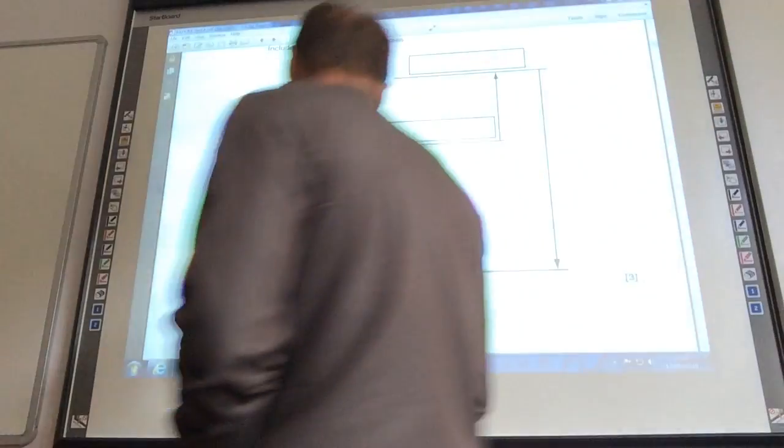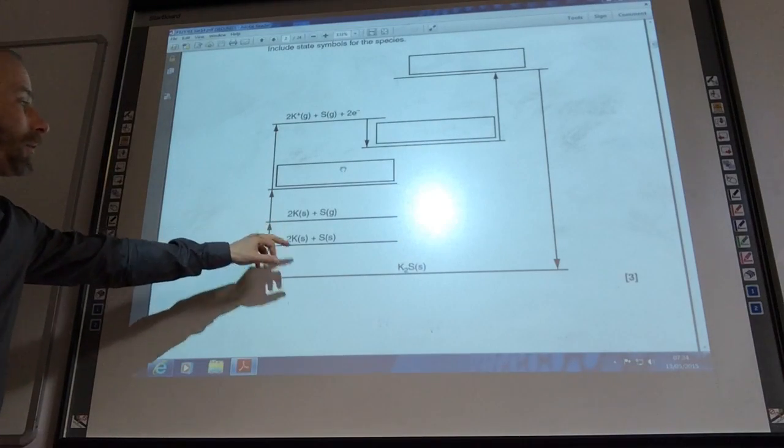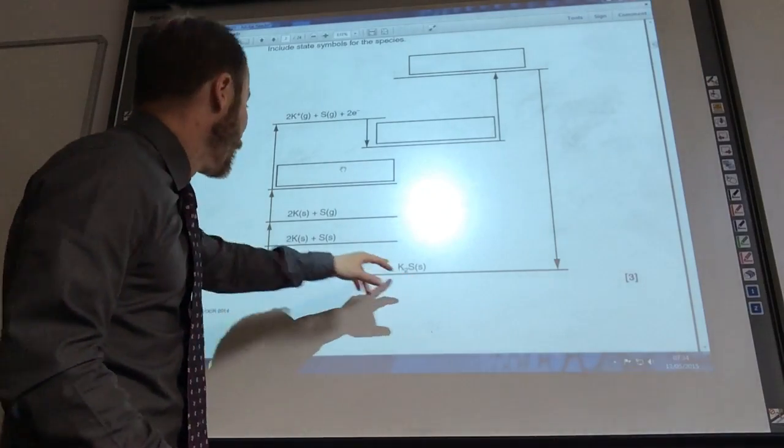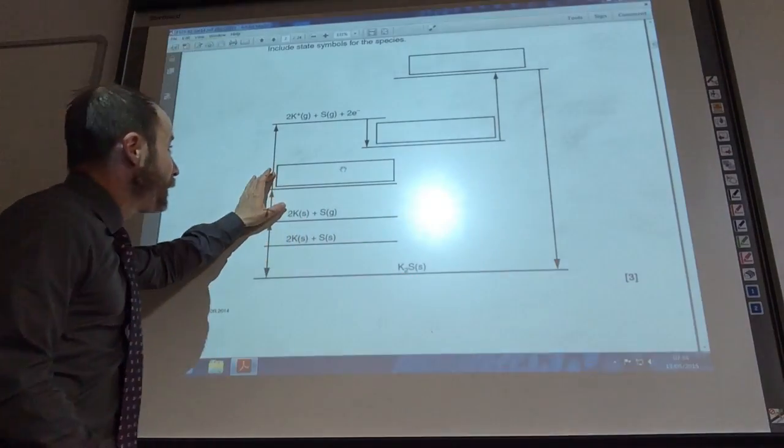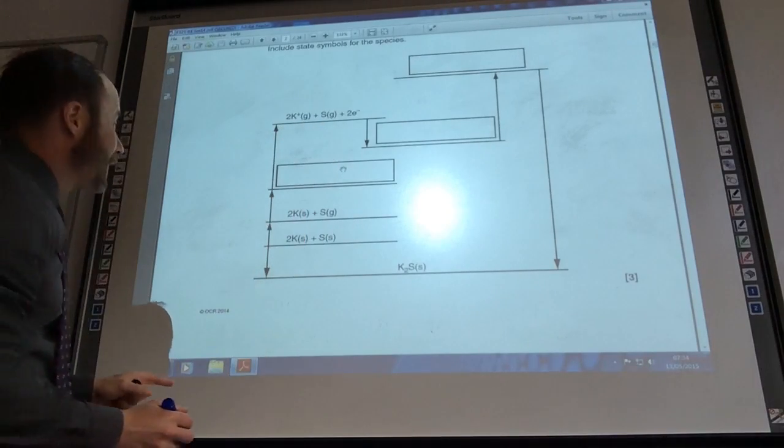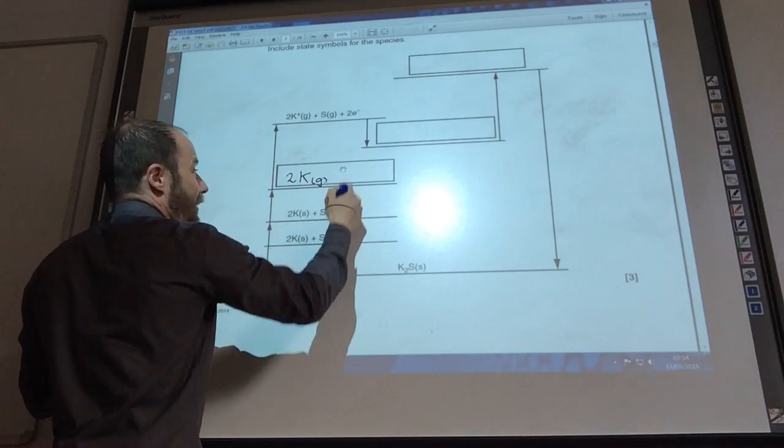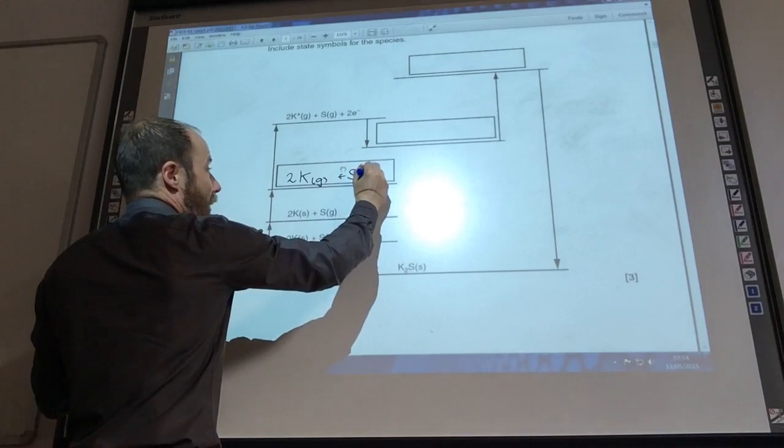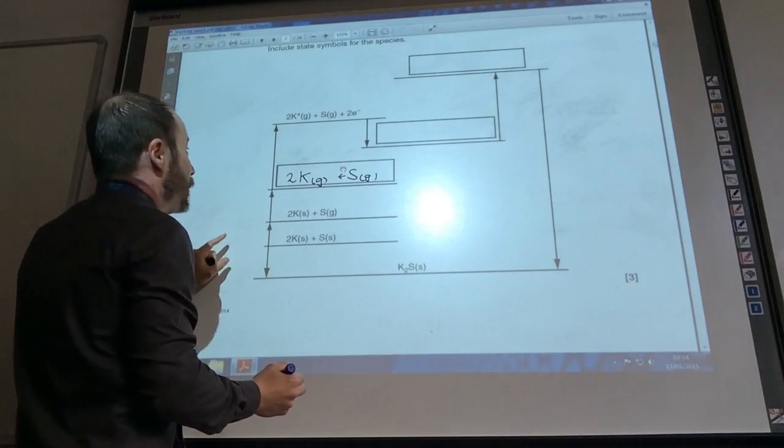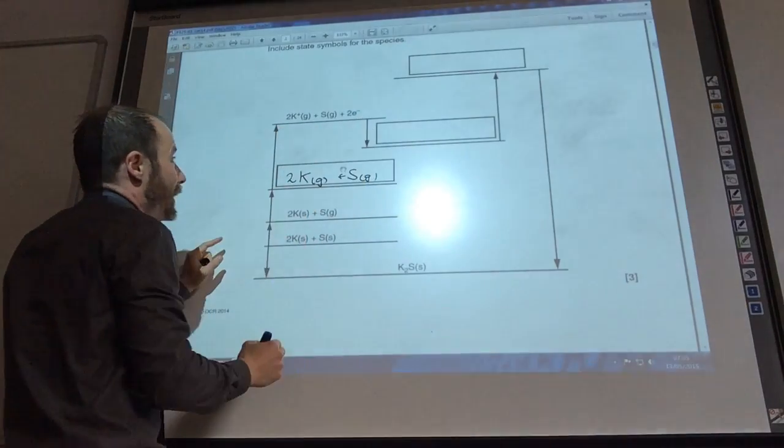The key things to notice is you have got two potassiums here as you go through. You're going to have two here, so you need to remember to times everything by two for potassium. So the first step here, I'm going to get to two potassium plus in the gaseous state. So here you're going to have 2K in the gas, not done anything with sulfur at all. Then you're going to do the first ionization energy of potassium there.